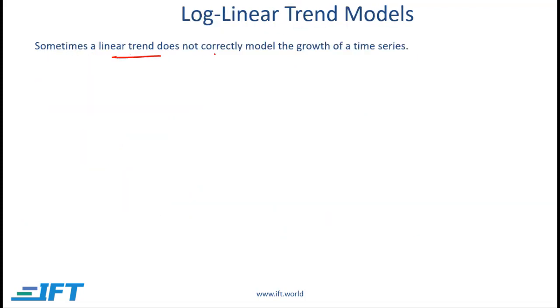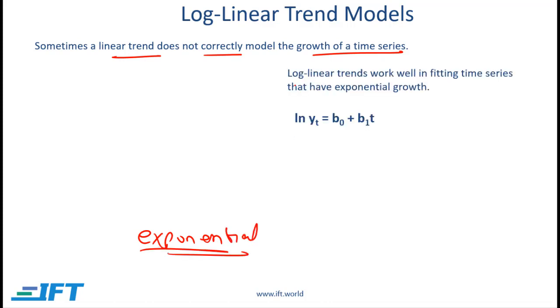Sometimes a linear trend does not correctly model the growth of a time series and this issue is quite common with time series data because when we look at time series data such as sales, sales typically grow at a particular rate. When we have growth at a particular rate then we say that our growth is exponential. With exponential growth it makes more sense to use a log linear trend model and here is what a log linear trend model looks like.